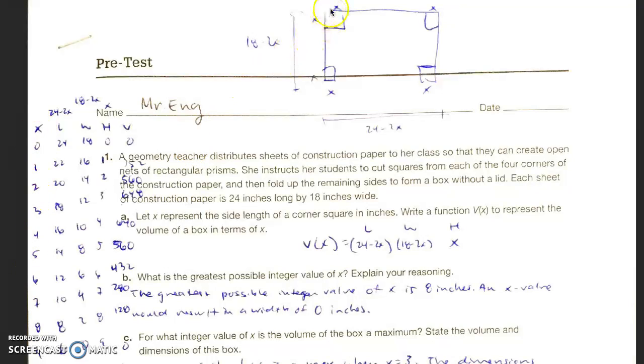X represents the length on the cutout square. Length represents 24 minus 2x. Width represents 18 minus 2x. Height represents x. And then I multiply those three to get volume.